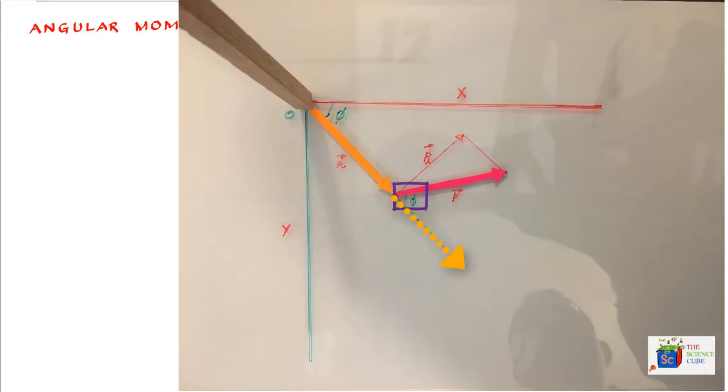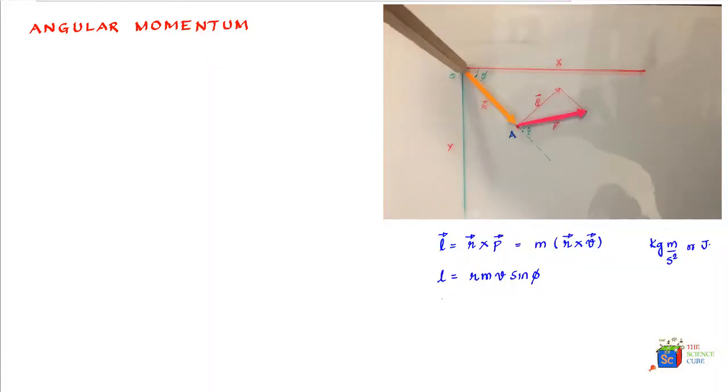where phi is the smaller angle between the vector P and vector R. And just the way we manipulated the force vector and position vector in the earlier lesson, we could do the same thing to represent the value of angular momentum in various ways.